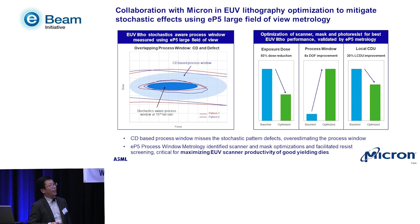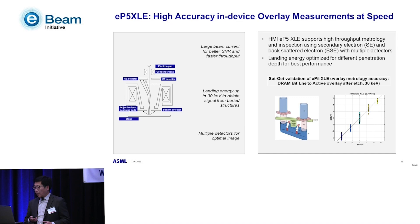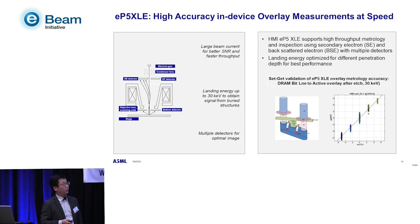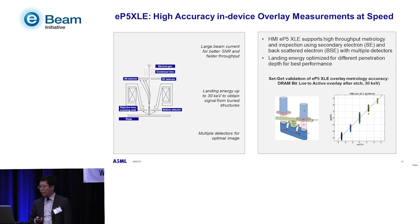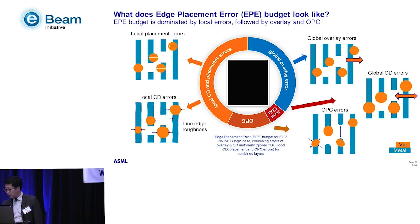The other product in our metrology portfolio is the EP5 XLE, which offers up to 30 keV landing energy. With this we can see through bare structures and measure overlay. One example demonstrated on a DRAM bit-line-to-active overlay case shows a scatter plot of measured overlay versus programmed overlay, demonstrating accuracy in overlay measurements.